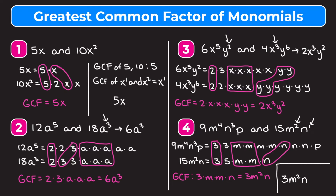For the p: you can either memorize the rule that a variable only appears in the GCF if it shows up in every term, or think of the second term as having p to the zero — since anything to the zero equals 1, and multiplying by 1 doesn't change the answer. Either way, since p doesn't show up in every monomial, it's not in our answer, and we get 3m squared n.